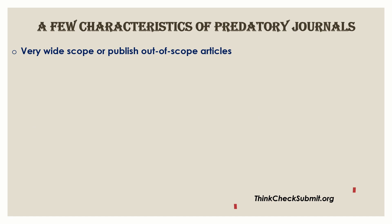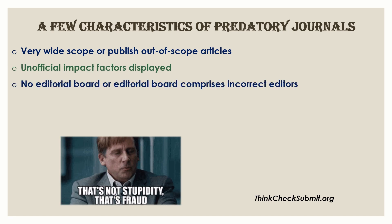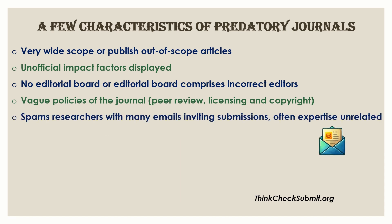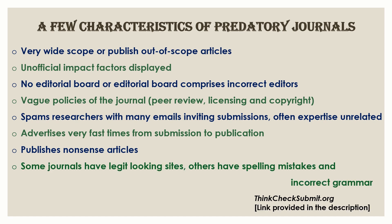Here are characteristics of predatory journals, which you can also find at thinkchecksubmit.org. These journals have a very wide scope or publish out-of-scope articles, display unofficial impact factors, have no editorial board or editors who are not actually part of the journal, and have vague policies on peer review, licensing, and copyright. They spam researchers with emails inviting manuscript submissions — often on unrelated topics — advertise very fast submission-to-publication times, and may even publish nonsense articles. Some have legitimate-looking sites, while others contain spelling mistakes or incorrect grammar.